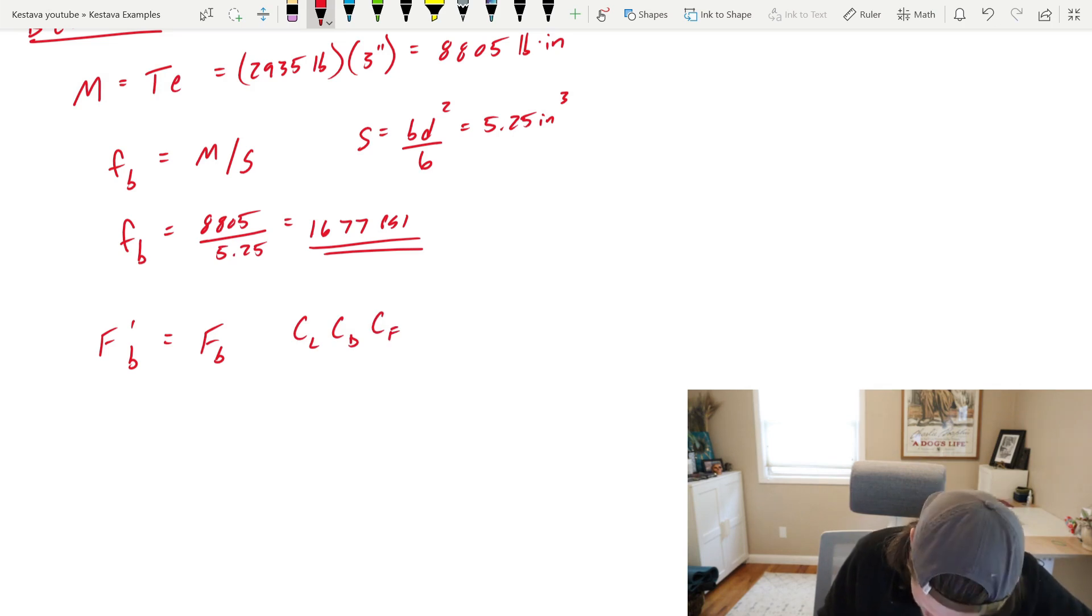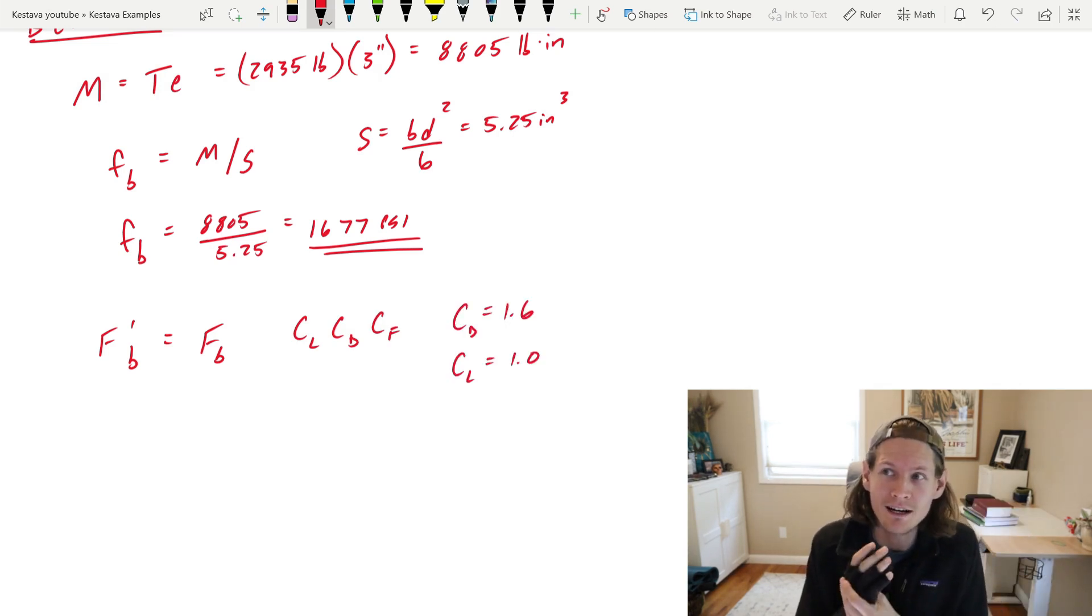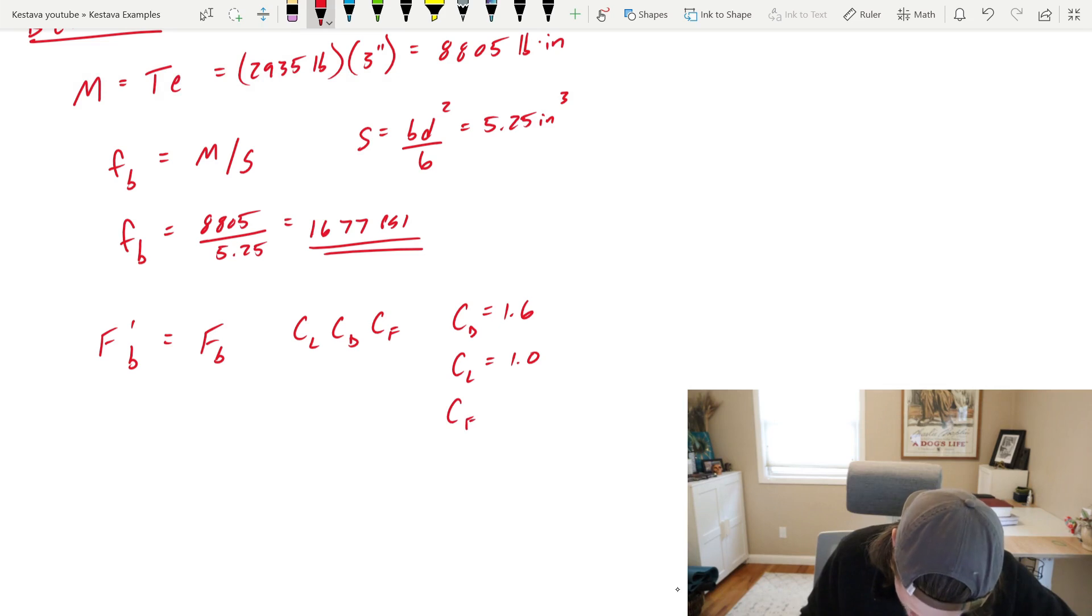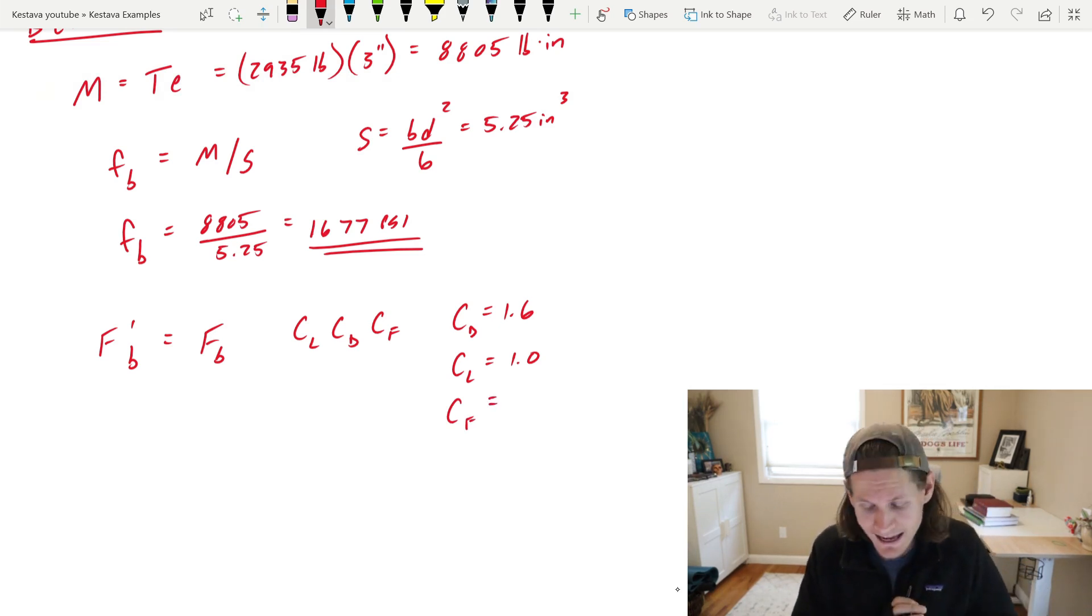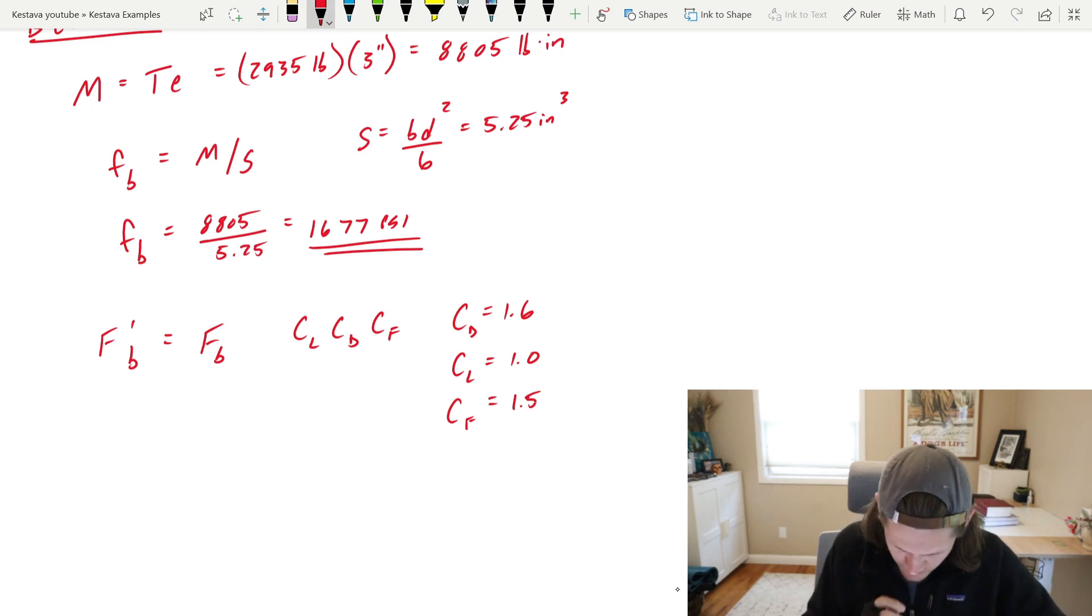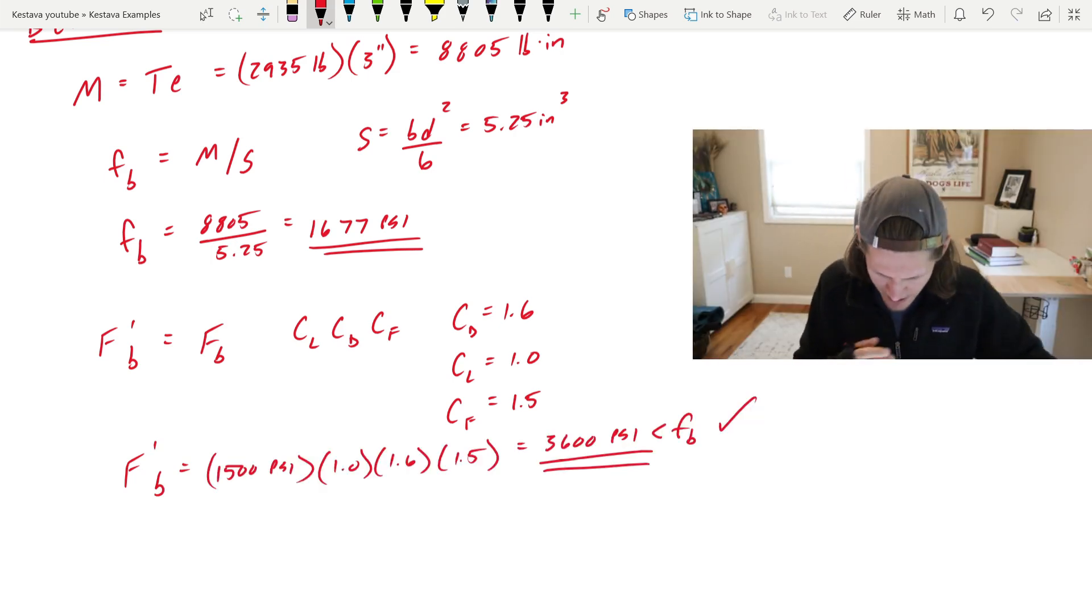Now let's determine our capacity. F prime B is equal to FB times your adjustment factors. Today we'll need CL, CD, and CF. CD, we already know. CL is equal to 1.0 because the breadth of the post is greater than the depth of the post based on the axis of bending that we're looking at. And you can find that in the NDS, in the CL section. And then CF is 1.5. So our bending capacity, F prime B, is equal to 3600 PSI, well less than our bending demand.